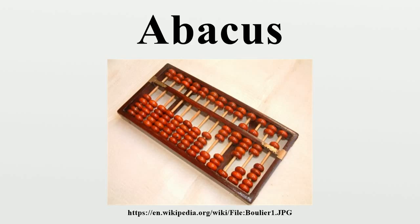In Japanese, the abacus is called soroban, imported from China in the 14th century. It was probably in use by the working class a century or more before the ruling class started. As the class structure did not allow for devices used by the lower class to be adopted by the ruling class, the one-quarter abacus, which is suited to decimal calculation, appeared circa 1930, and became widespread as the Japanese abandoned hexadecimal weight calculation. The abacus is still manufactured in Japan today even with the proliferation, practicality, and affordability of pocket electronic calculators. The use of the soroban is still taught in Japanese primary schools as part of mathematics, primarily as an aid to faster mental calculation. Using visual imagery of a soroban, one can arrive at the answer in the same time as, or even faster than, is possible with a physical instrument.